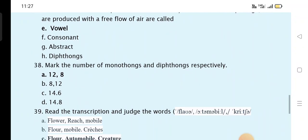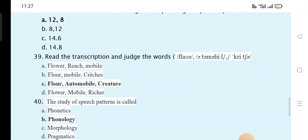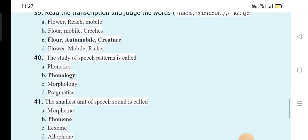Mark the number of monophthongs and diphthongs respectively. Twelve are the monophthongs and eight are the diphthongs. Read the transcription of the judge word: floor, automobile, and courier chat.